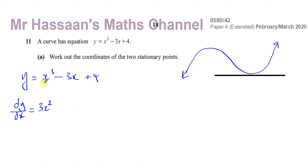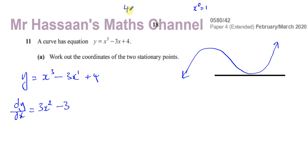The rule is: multiply by the power and then take 1 from the power. For x cubed, multiply by 3 to get 3x squared. For the term minus 3x, there is a hidden power of 1, so multiplying by 1 gives minus 3, and x to the power of 0 equals 1, leaving just minus 3. Any constant disappears when you differentiate — for example, if you had y equals 4, the gradient of that line would be zero, so the gradient function for a constant is zero.